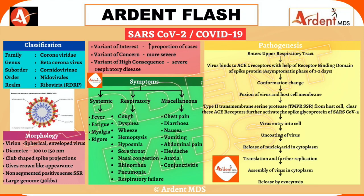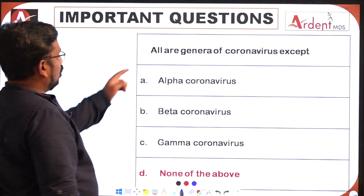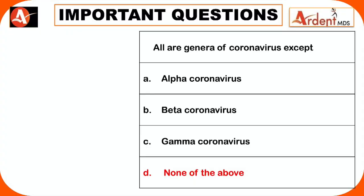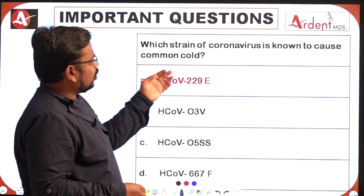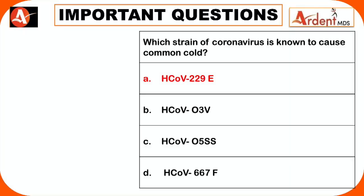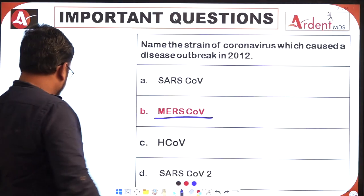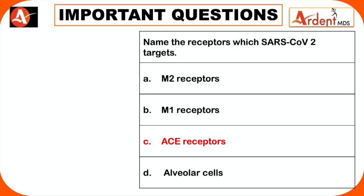Coming to more important MCQ questions: Coronavirus is a single-stranded RNA virus. Alpha, Beta, Gamma, Delta are all genera of the coronavirus — so answer is 'none of the above' for a question asking which is a genus. The strain known to cause common cold is HCoV-229E and HCoV-OC43. The strain that caused the 2012 outbreak is Middle East Respiratory Syndrome coronavirus — MERS-CoV.